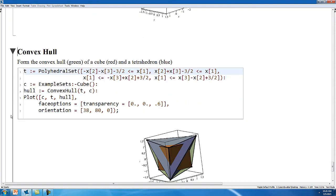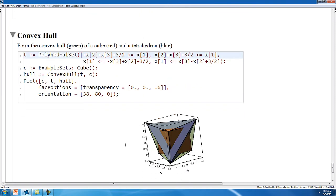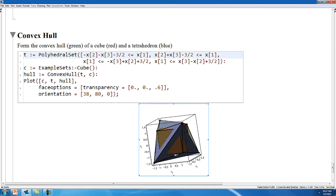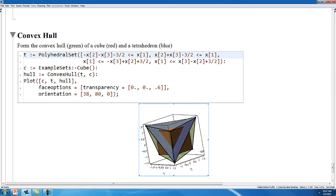You can form the convex hull of a list of sets. So for example, in this case, we have the cube and a tetrahedron, and their convex hull is going to be the smallest polyhedral set that contains both of these sets. That's the green set that we see rendered transparently here.